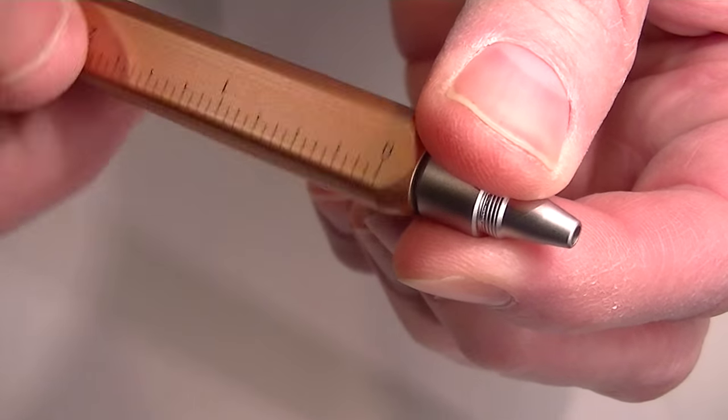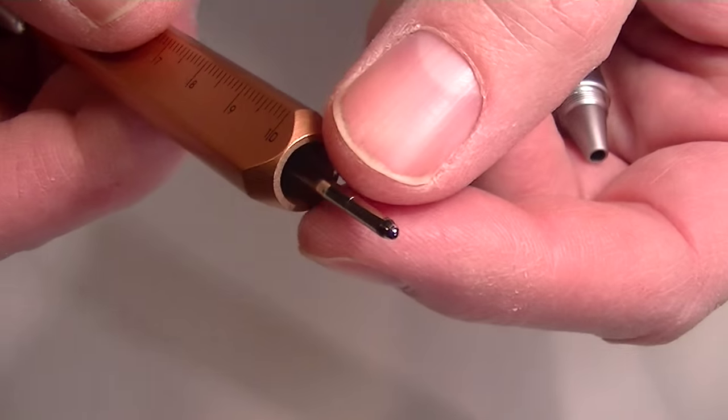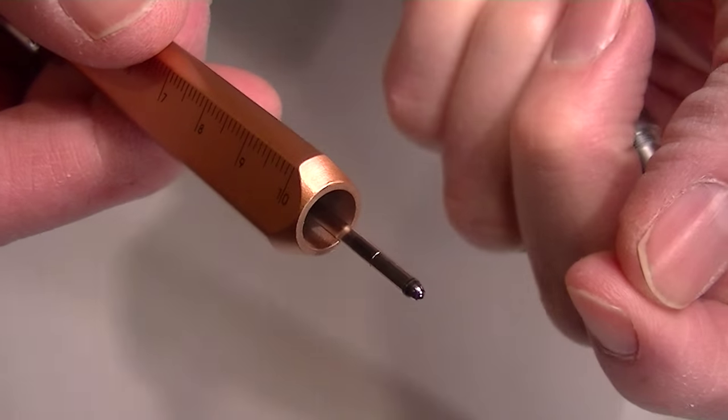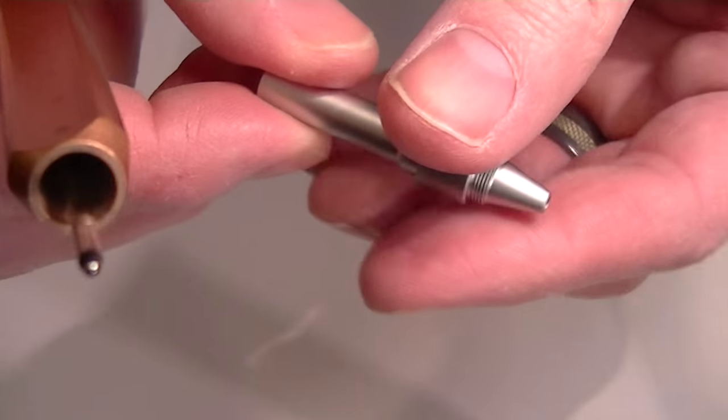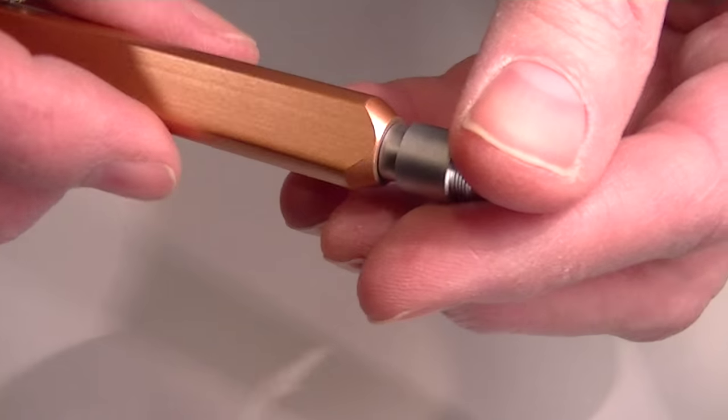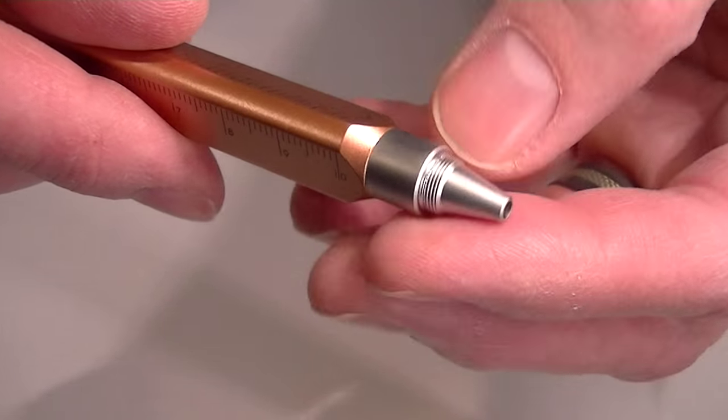You can unscrew that front section from the barrel of the pen. This refill is the Monteverde mini soft roll. You just pull that right out and that's how you change the refill. It's pretty easy to change, a little easier to change this than the original tool pen. I like that about the new design.